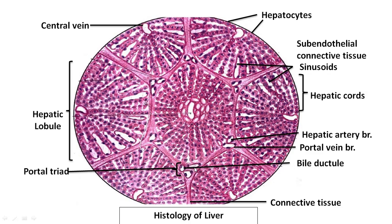The cells lining the blood vessels are called endothelium, and the cells lining the sinusoids are also sinusoidal endothelium. The major cell of the liver is the hepatocyte. Around the sinusoids there is a perisinusoidal space, and around the portal triad there is a periportal space. Around the perisinusoidal space there is a special type of cell called the Ito cell, also known as the hepatic stellate cell.